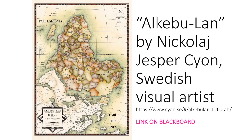I want you to start by looking at this map. It's really an art project. It's a map of an imagined Africa called Al-Kaboulan by the artist Nikolai Jesper Sayon. He did this to basically try to think about how imperialism affected Africa — or really, what would Africa look like if the European powers had never colonized the continent?